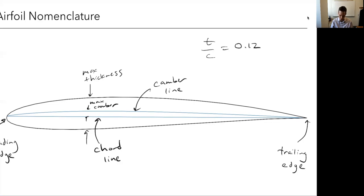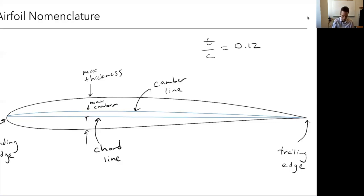Another point we're going to use is called the quarter chord line or quarter chord point. The chord length is the distance from front to back, and the quarter chord is just one fourth of the way back from the leading edge. That's a point that's important in aerodynamics. These are the basic parameters of an airfoil.